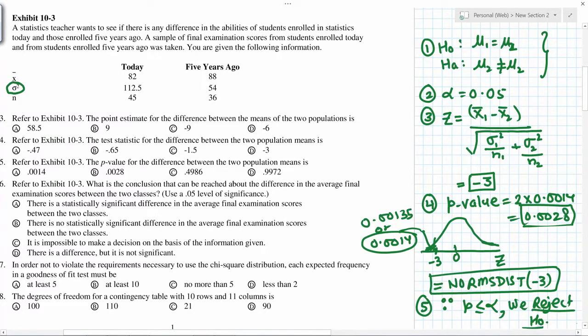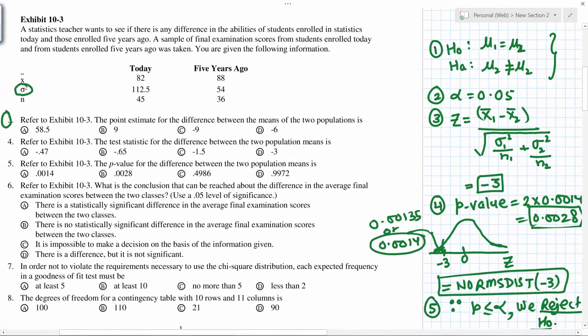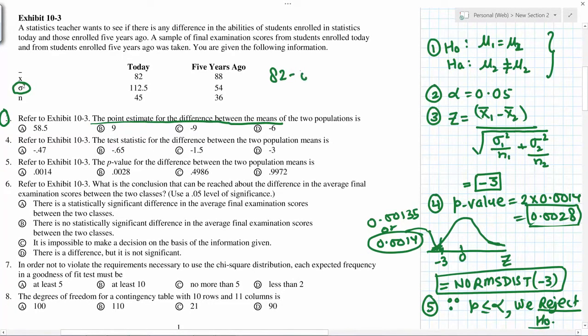So now if you look at the questions one by one, number three. Point estimate for the difference between the means: 82 minus 88 equals negative six.